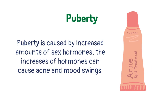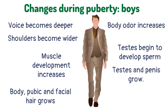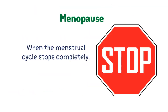Puberty is caused by increased amounts of sex hormones. The increase in hormones can cause acne and mood swings. In women, physical changes include hips widening and breasts developing. In boys, changes include the voice becoming deeper and facial hair growing. The menopause is when the menstrual cycle stops completely.